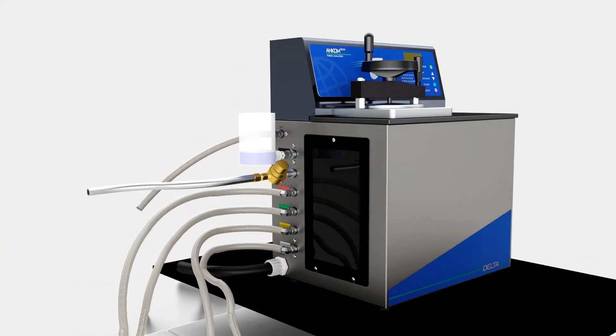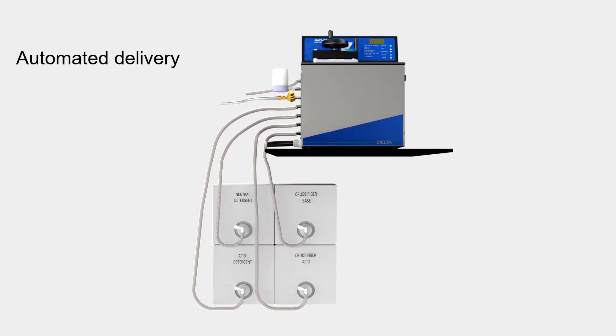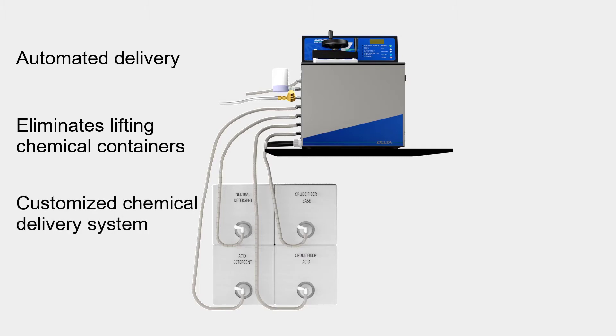The internal pumping system allows the user to place any chemical container within range of the instrument for automated delivery. No gravity feed is necessary, therefore eliminating the need to lift heavy chemical containers and enabling the ability to connect the Delta to a larger chemical delivery system.